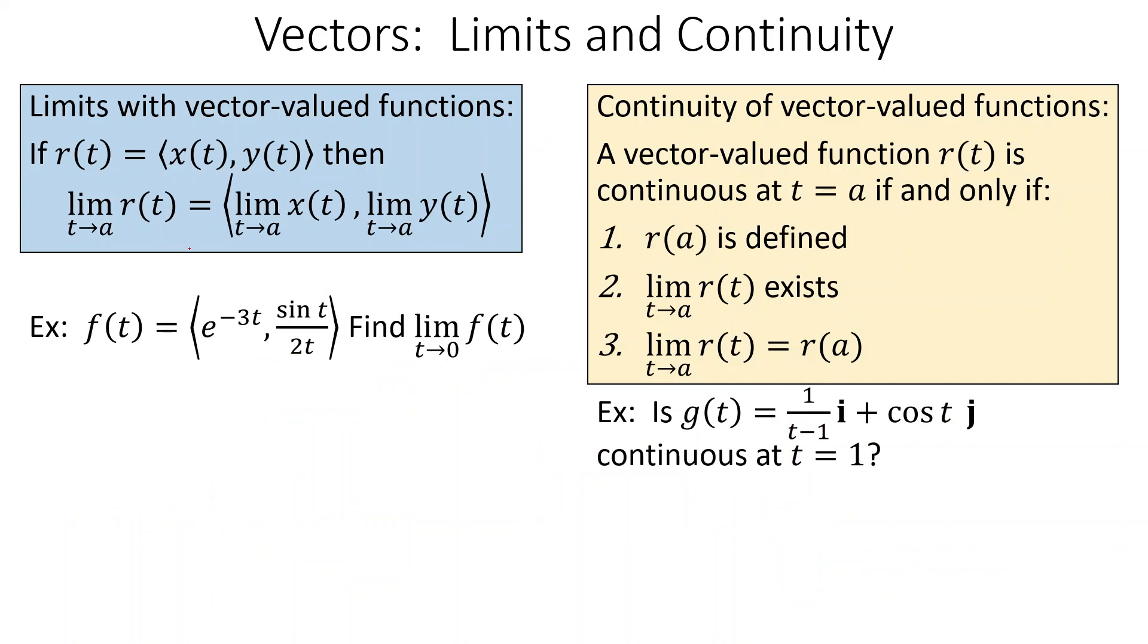They work exactly how you might think they would. So if we want the limit of the vector r(t), where r(t) is (x(t), y(t)), we just take the limit in each part separately and we leave our answer as a vector inside these brackets or with the ij notation. So when we look for limits, our answers will be vectors.